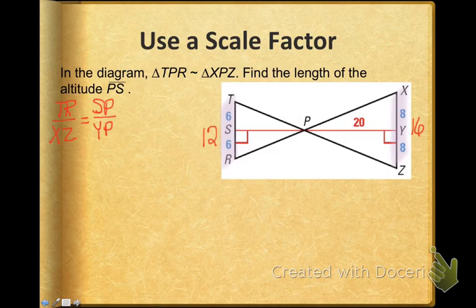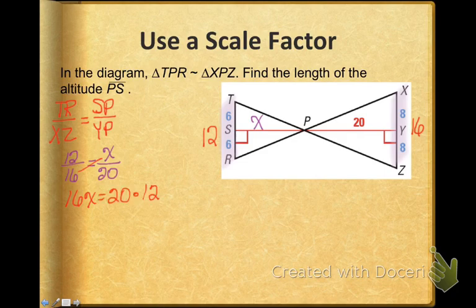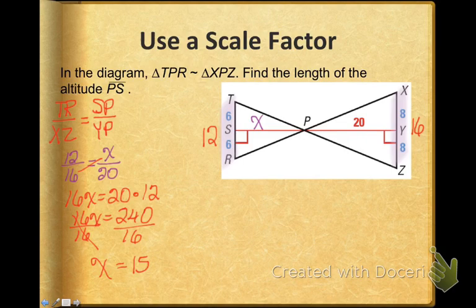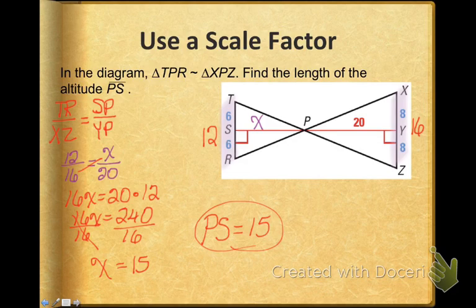And now I'm going to replace those with numbers. I'm going to say TR is 12, XZ is 16, SP is what we're trying to find so we're going to call that X, and YP is 20. Now I've got a proportion I can solve: 16 times X and 12 times 20. Then I'm going to solve that, I'm going to get that X is 15, so the length of PS, notice I don't have a bar above that line segment, the length of line segment PS is 15.